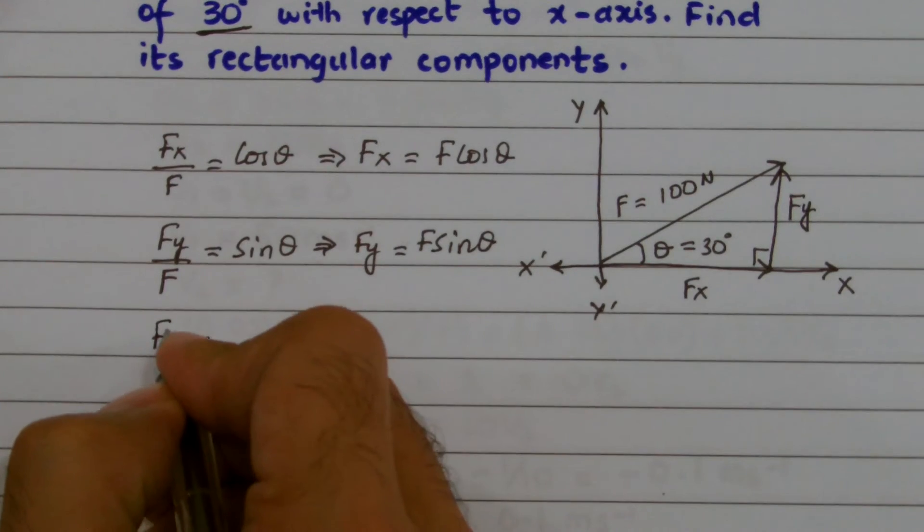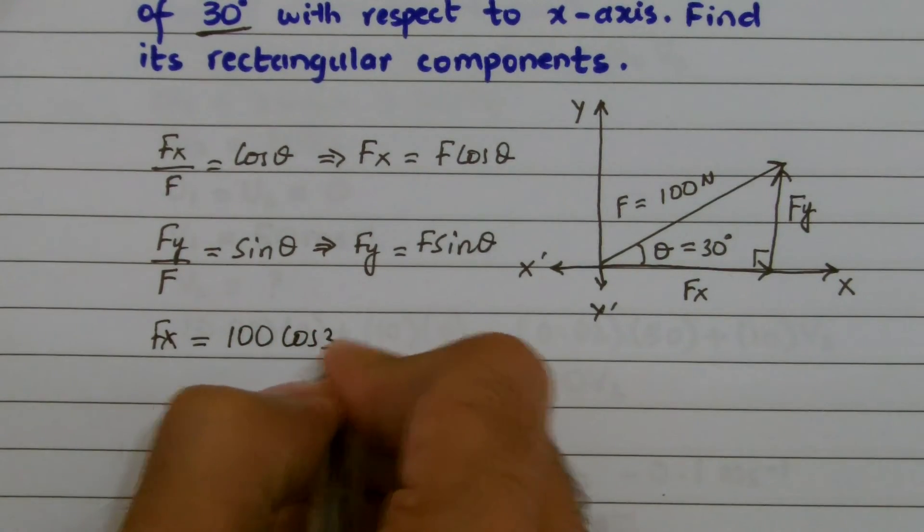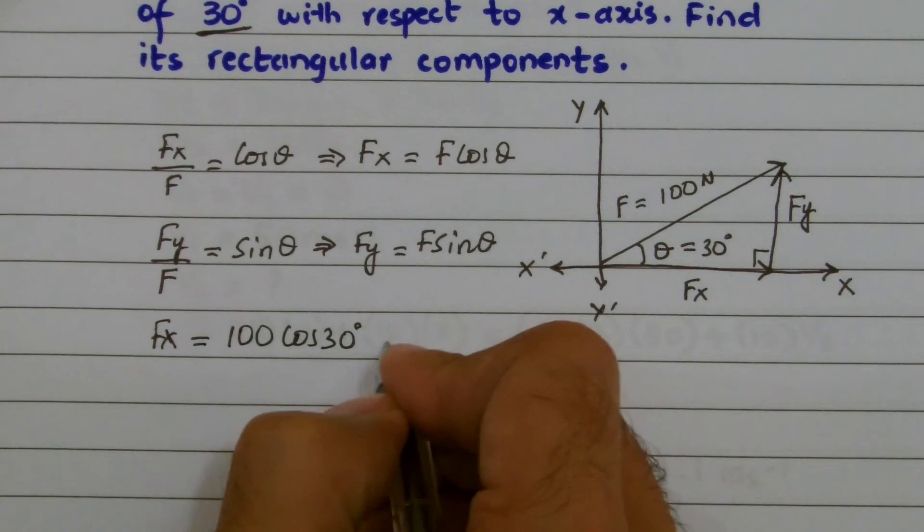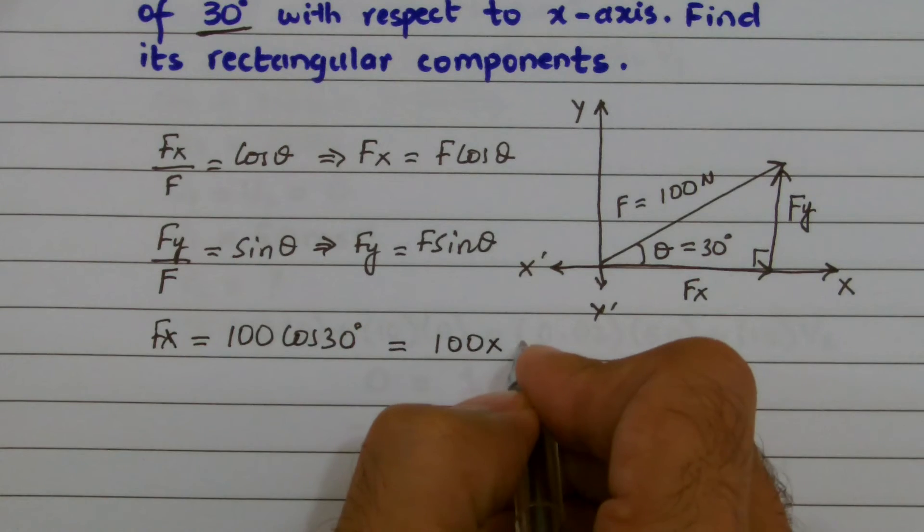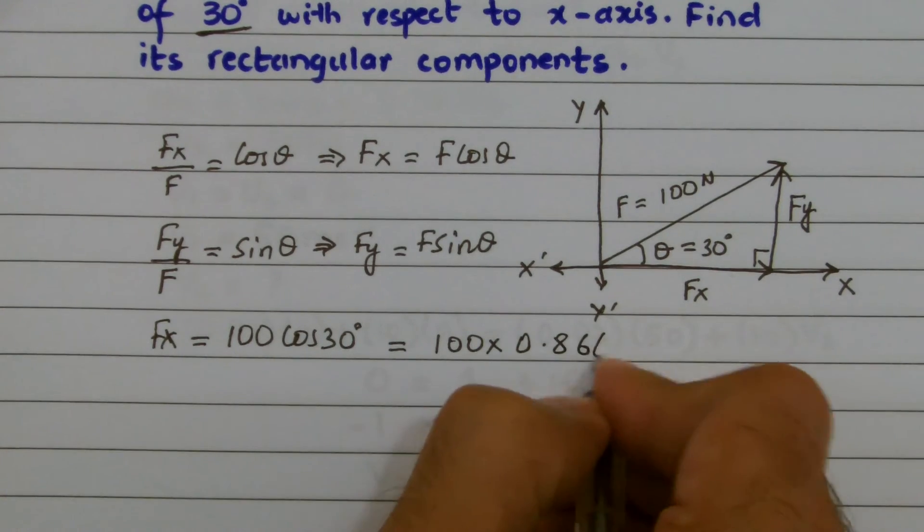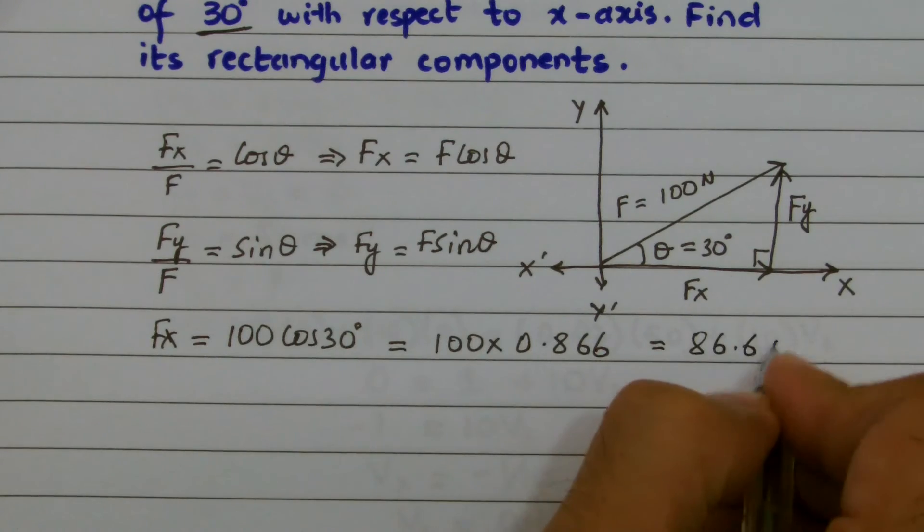Fx equals the amount of force, that's 100, cos 30. Theta is 30, so 100 multiplied by cos 30. Cos 30 is 0.866, so the answer is 86.6 N.